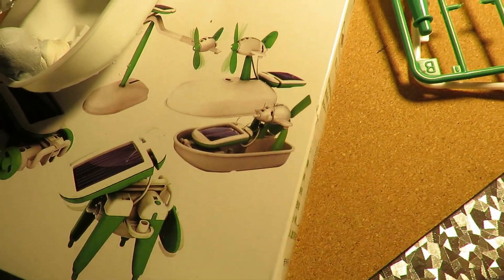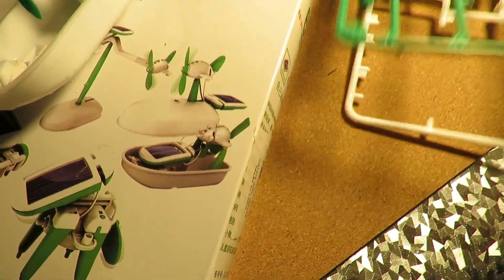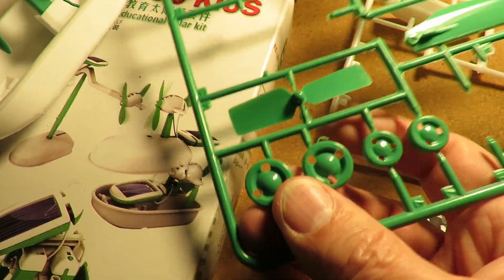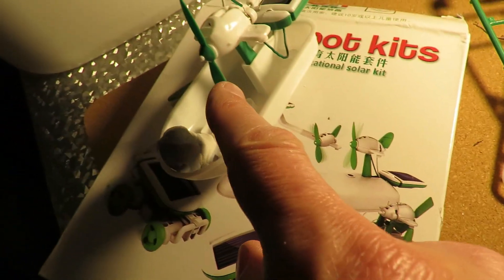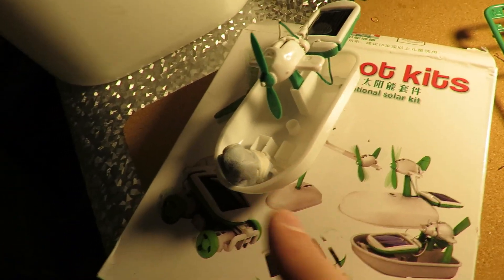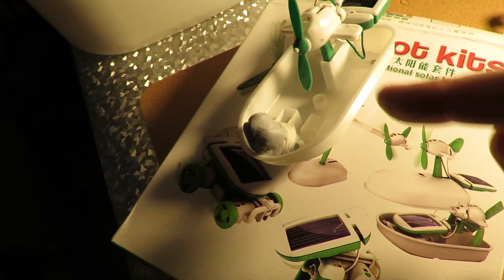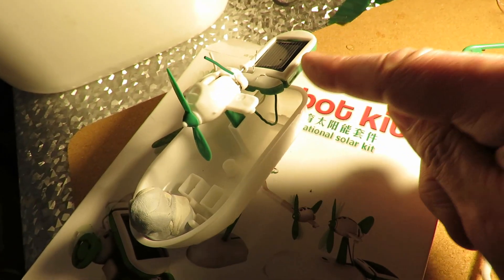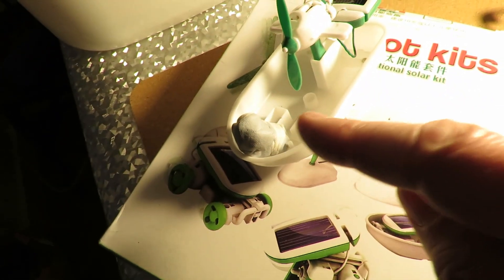That one uses the other propeller so that it pushes it along, whereas that propeller pulls it. So it works, but because I've got the solar panel right at the back I've had to put some weight at the front to balance it.